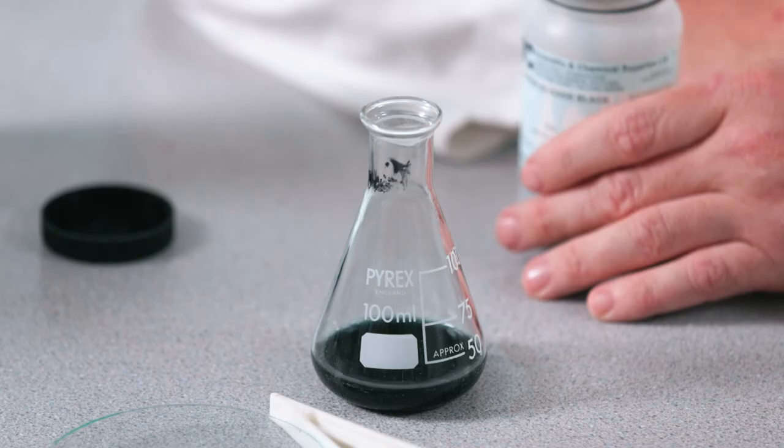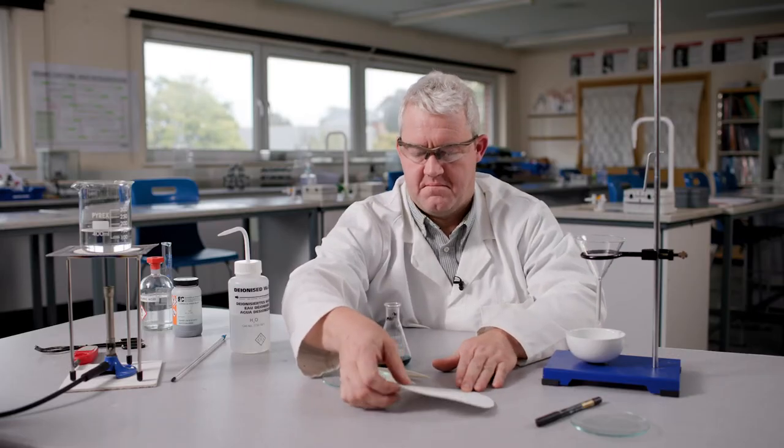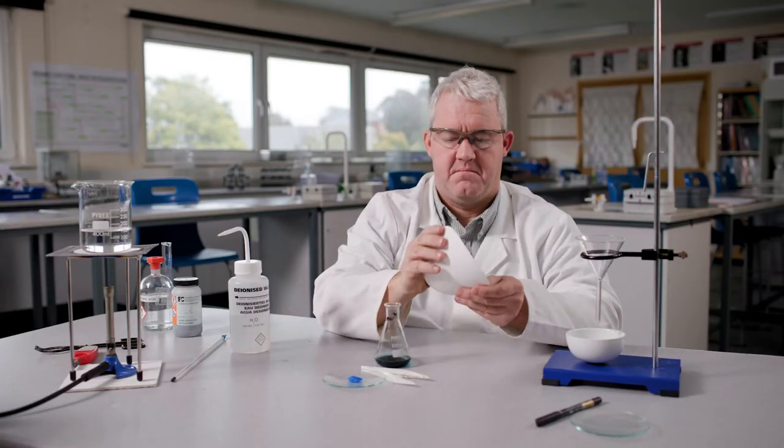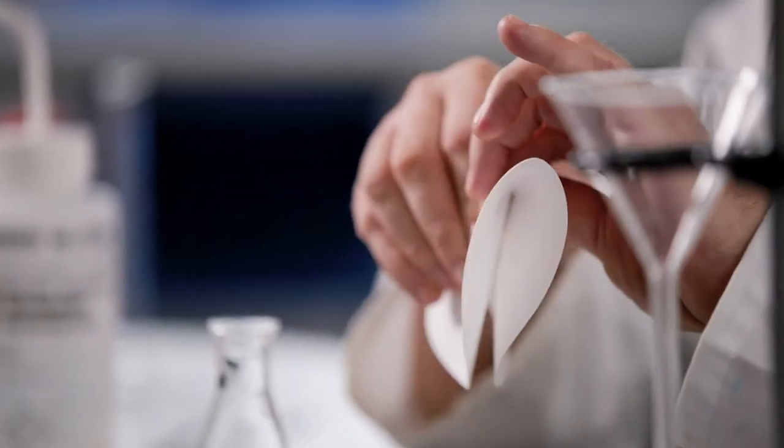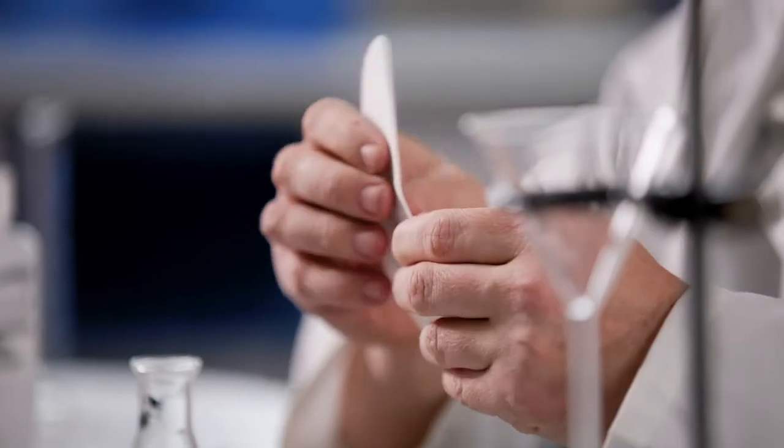At this point, the blue colour of the copper sulphate solution should be noticed. The excess copper oxide can now be removed via filtration. Fold a piece of filter paper into quarters. Open one of the quarters out to make a paper funnel.